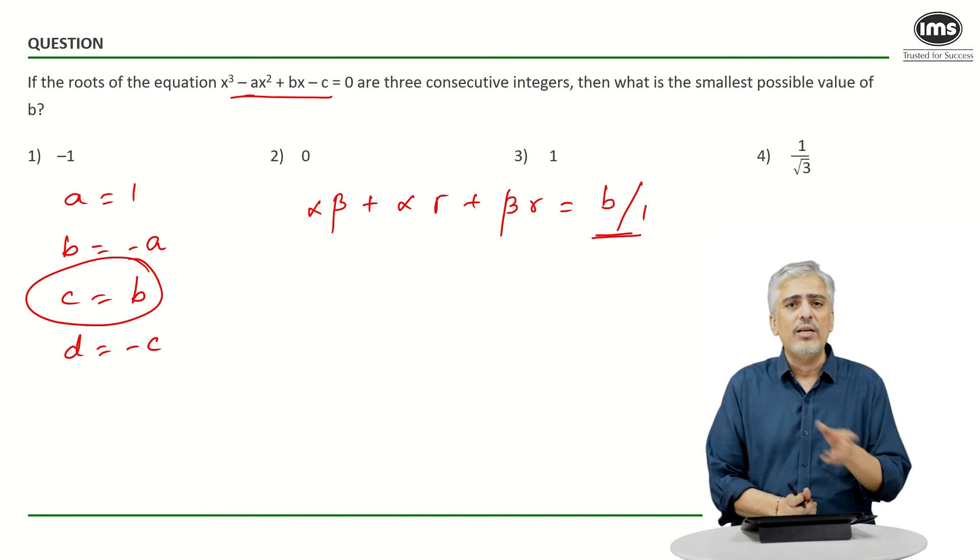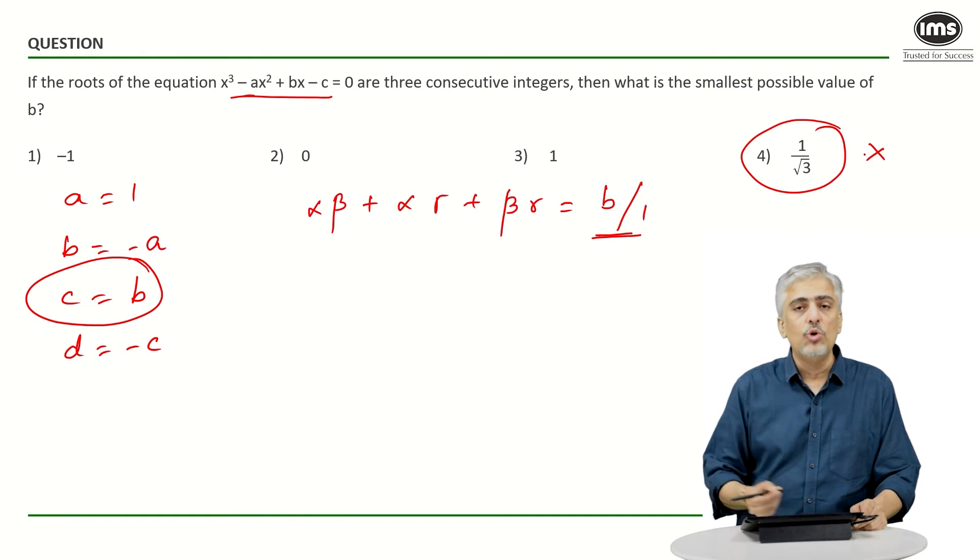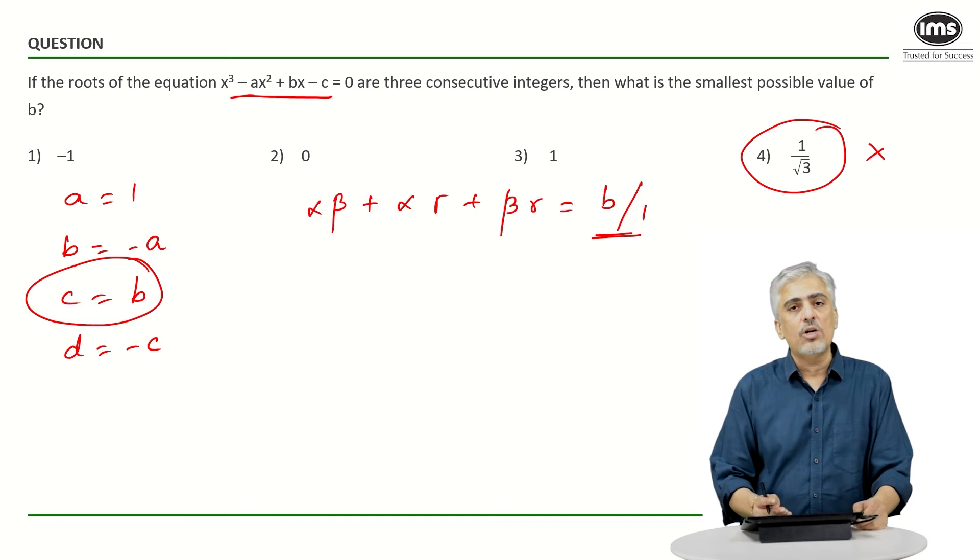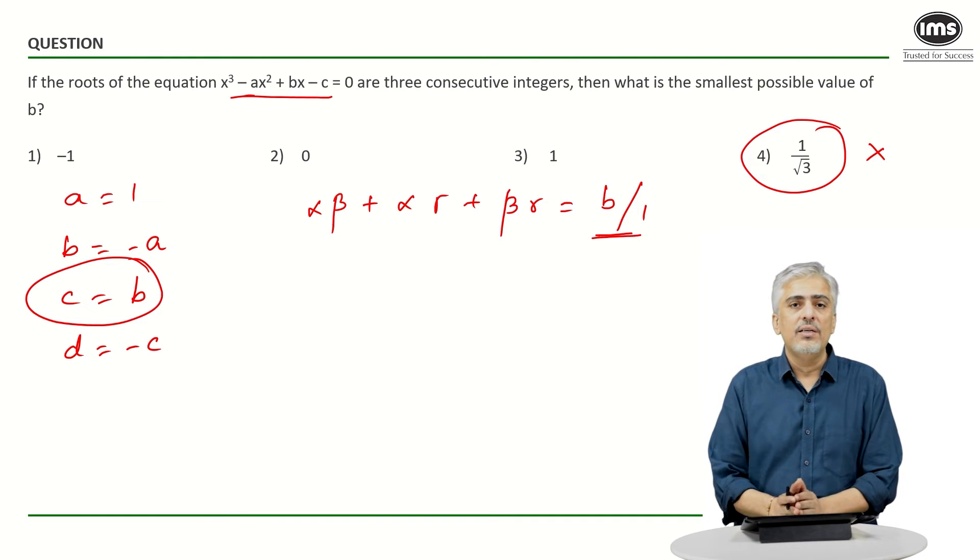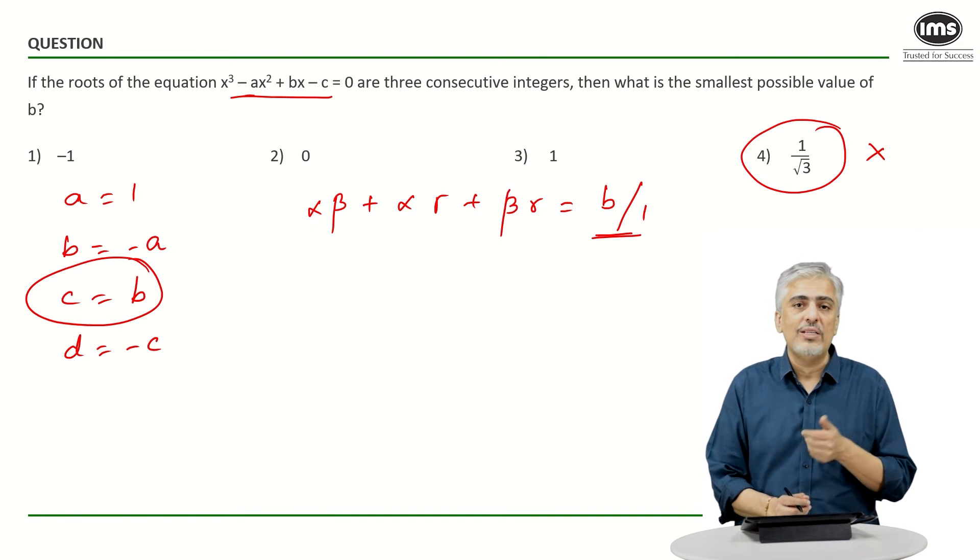Now think a little bit and look at the options also. This option is so useless. No way you can reach that answer. The other options are -1, 0, and 1. Which means I know my roots have to be all very small anyway. I knew they had to be integers.